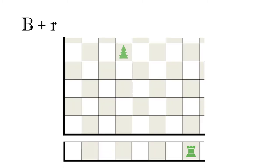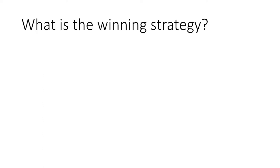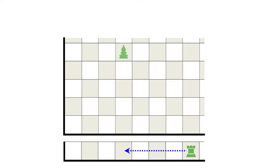We next consider the sum of the bishop and the baby rook. What is the winning strategy? Here is a particular example.